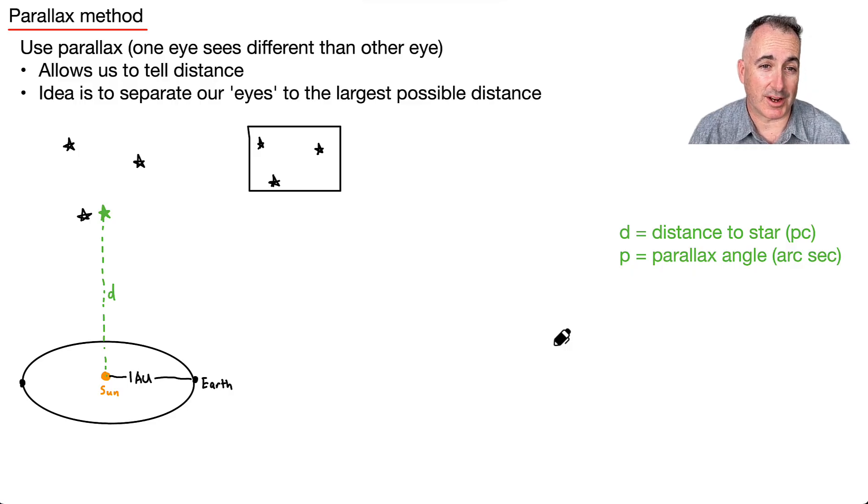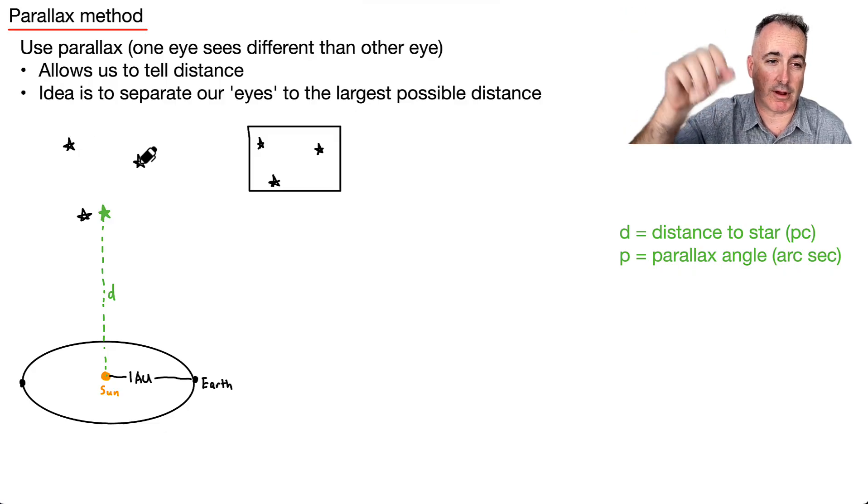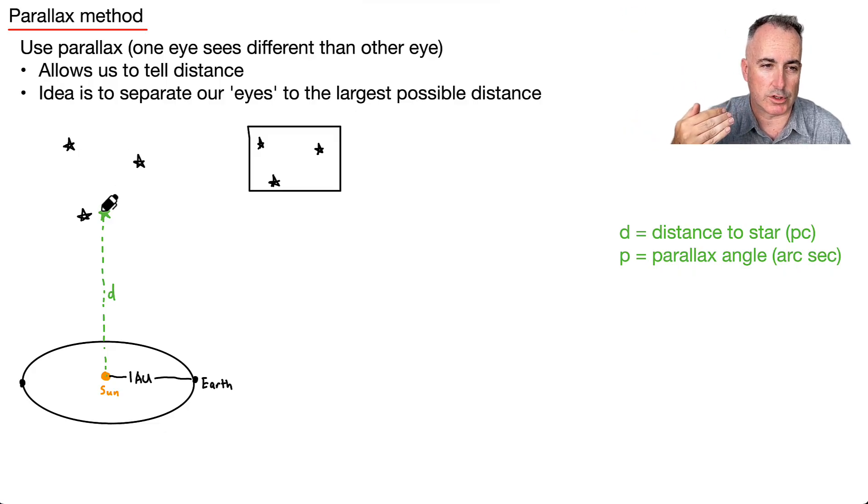So the way we figured out to do it is—what's the furthest we could put our eyes? Well if you take a picture of a star, let's say there's a green one right here, you take a picture of a star in our orbit, and then six months later you take another picture of it compared to the background stars. Let's assume these black ones here are further back in the background, and this one is actually relatively close to us.